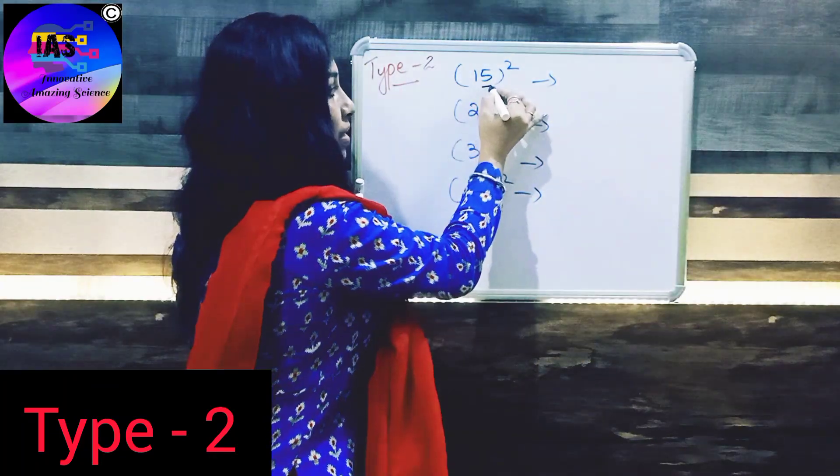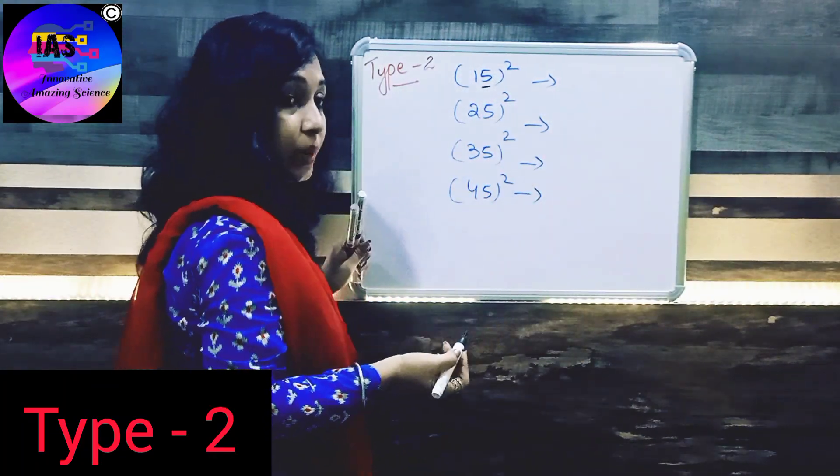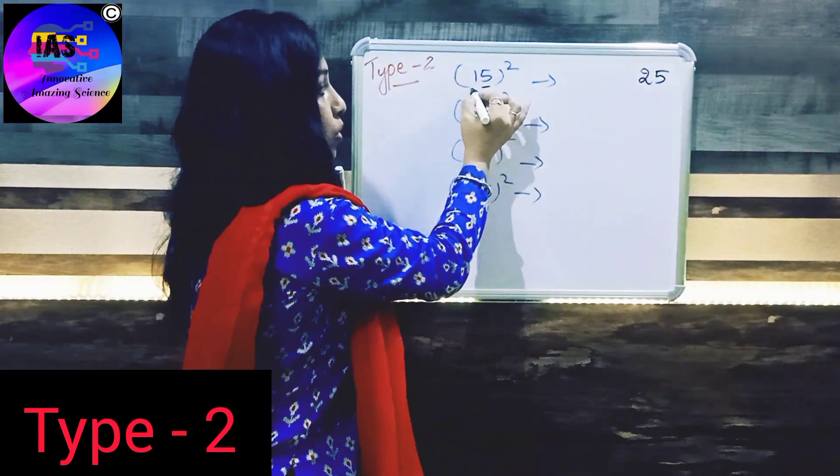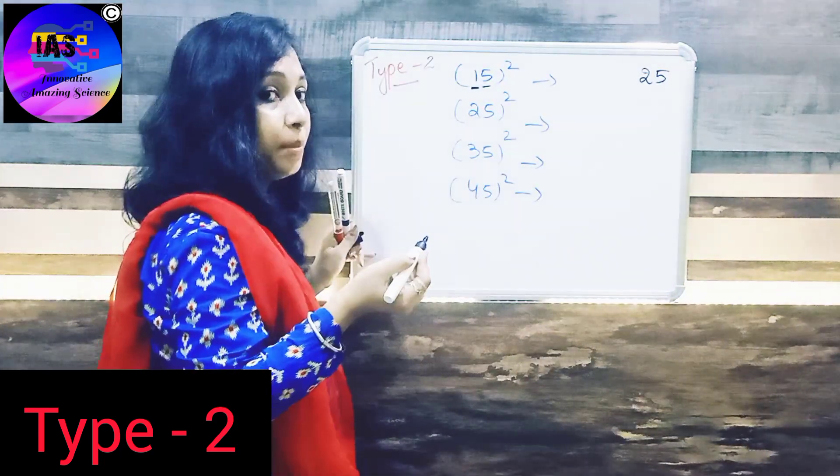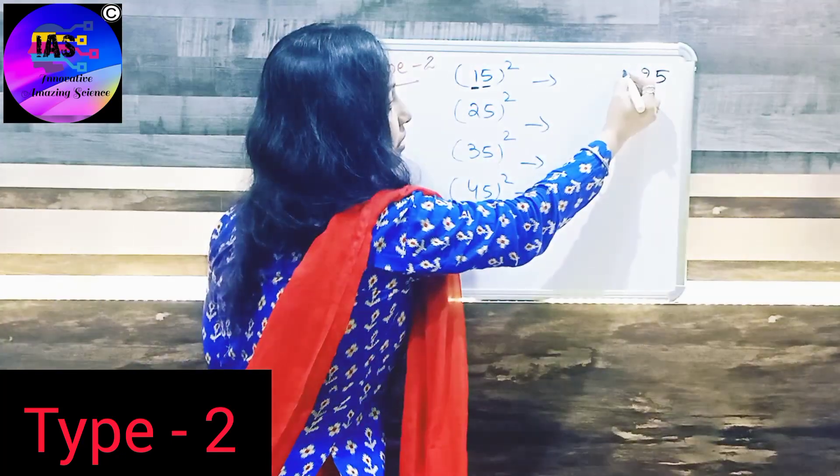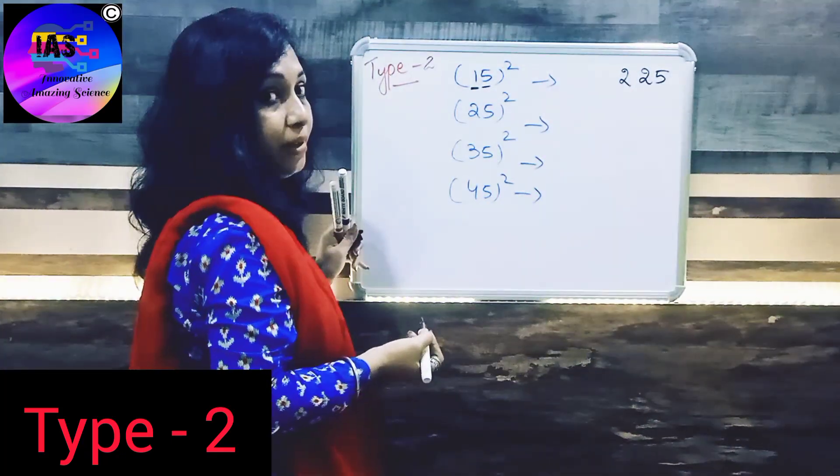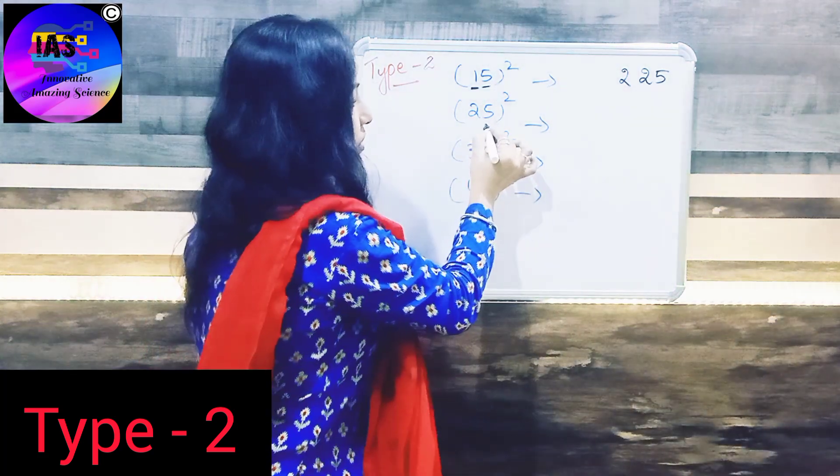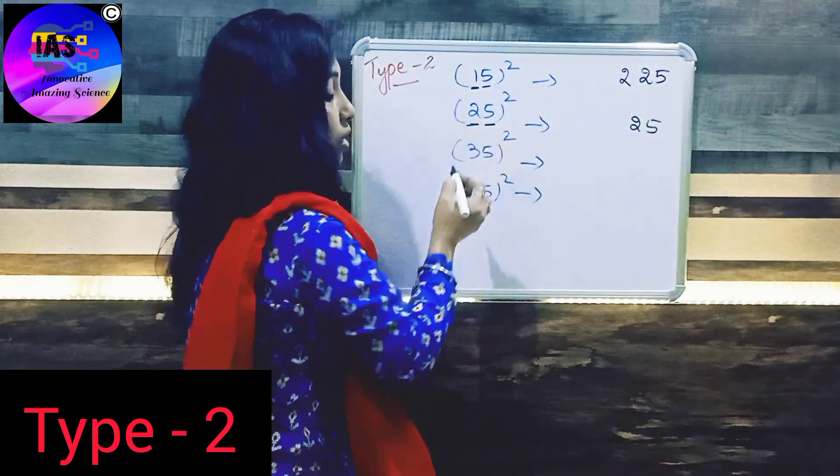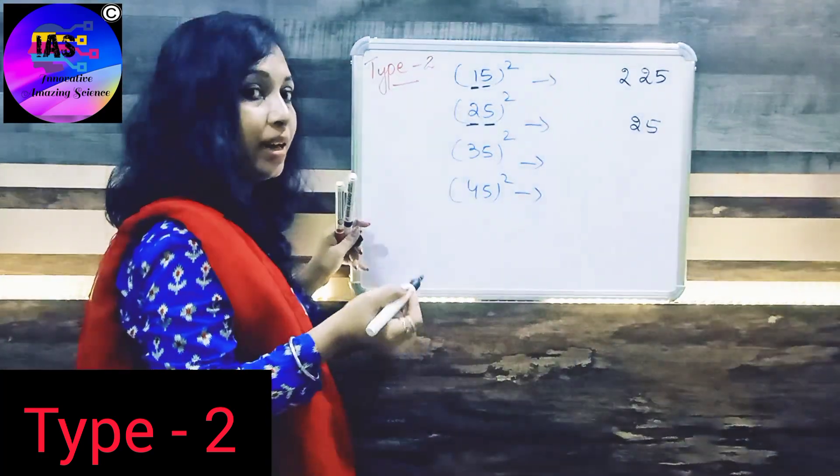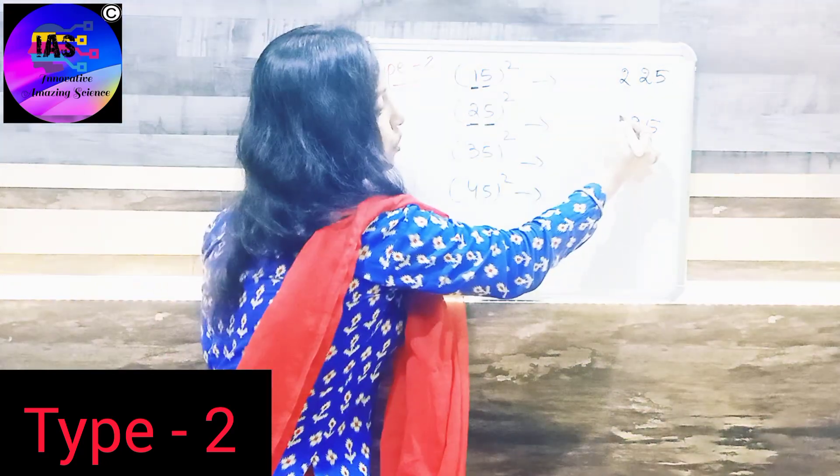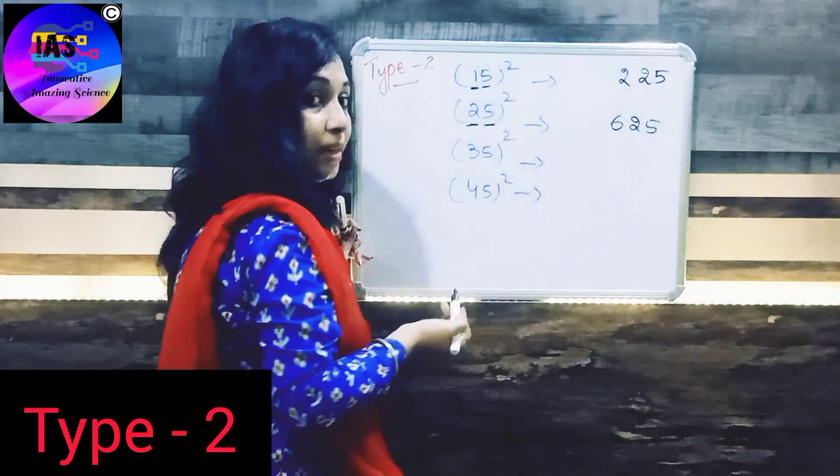We will start from this side. 5 square we already know is 25, so we will write on the right hand side 25. And here you have 1, so 1's next number is 2. We are going to multiply 1 into 2, that means 1 into 2 is 2. So the answer is 225. Let's see 25 square. First we will do 5 square is 25, and here we have 2. The next number of 2 in the higher order is 3, so we are going to multiply 2 into 3, that is 6. 25 square is 625.